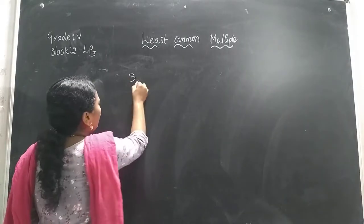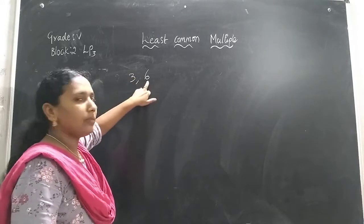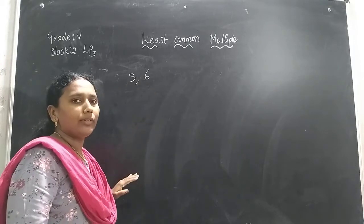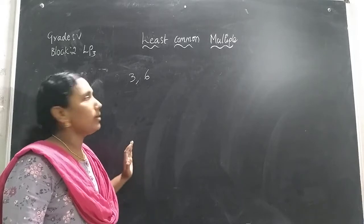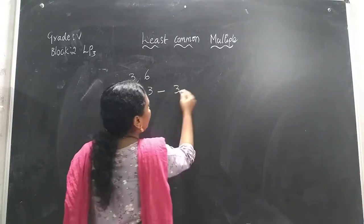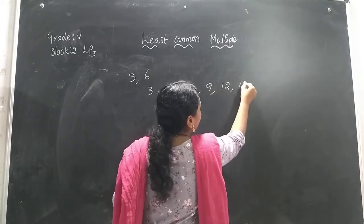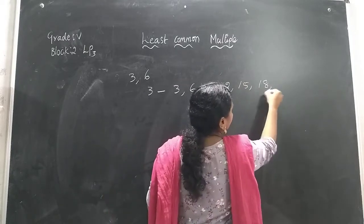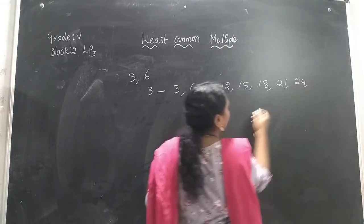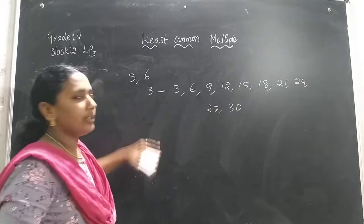Now we will see the multiples for 3 and 6. First I write the multiples for 3, then for 6, then find the common multiples, and take the least one as the LCM. Multiples of 3: 3, 6, 9, 12, 15, 18, 21, 24, 27, 30. I have written 10 multiples for the number 3.